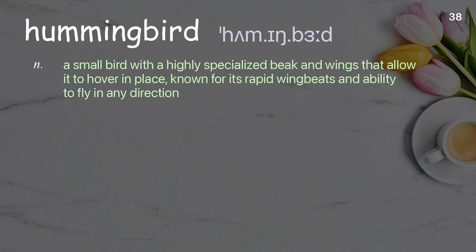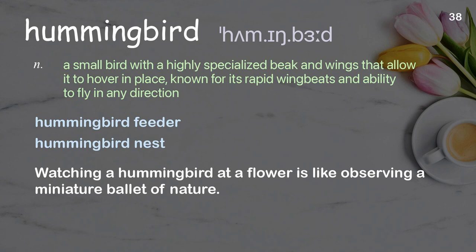Hummingbird: A small bird with a highly specialized beak and wings that allow it to hover in place, known for its rapid wing beats and ability to fly in any direction. Examples: hummingbird feeder, hummingbird nest. Watching a hummingbird at a flower is like observing a miniature ballet of nature.